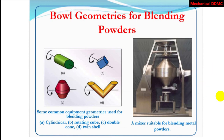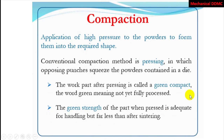This is a ball mill used for blending powders — it is a cylindrical-shaped ball that can be rotated so that the powders are mixed during rotation. Compaction is the application of high pressure to the powders to form them into the required shape. This is a very important stage in powder metallurgy techniques.